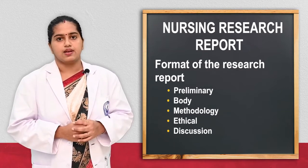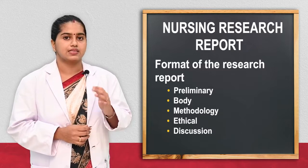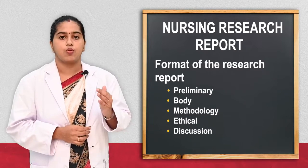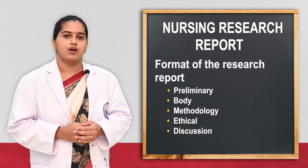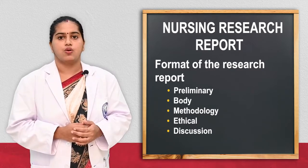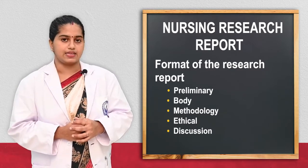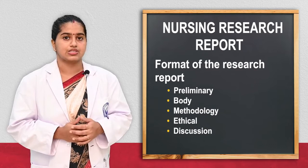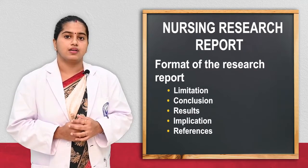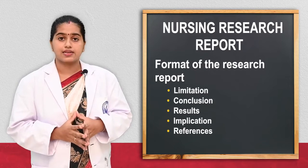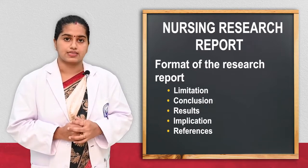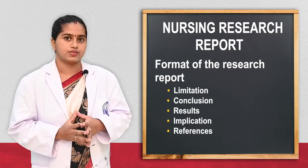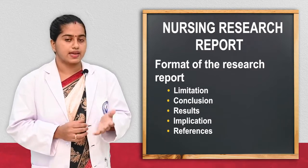Then comes the review of literature. Next is methodology — in the methodology: research approach, research design, setting, population, sample, sampling technique, data collection method, procedure, and method of data analysis. Ethical clearance also has to be mentioned. Then next is discussion, limitations, summary, and conclusions. Before that, the result chapter — results and interpretation of results — then the tables and figures used, and how the objectives and hypothesis have been interpreted.